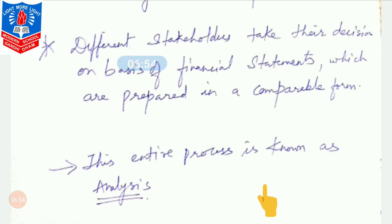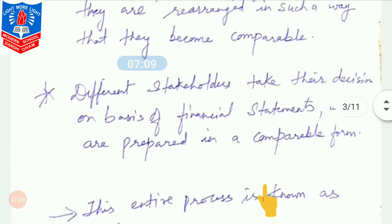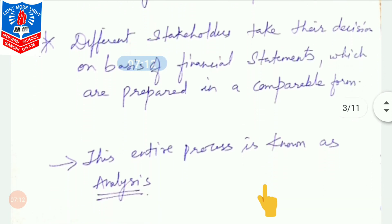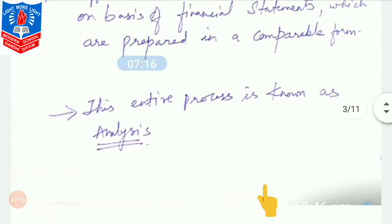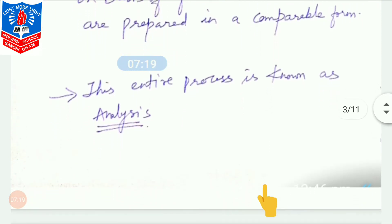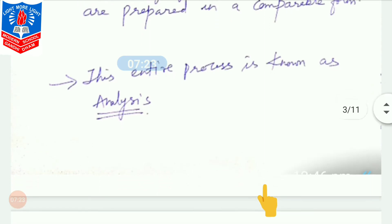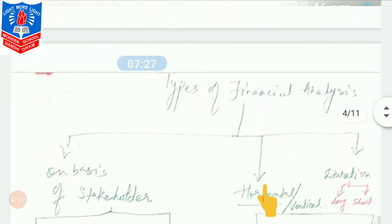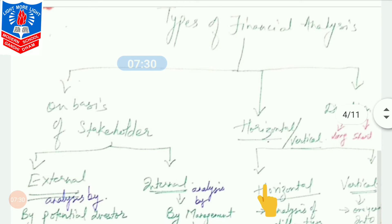After preparation of financial statements, they are arranged in such a way that they become comparable — with a minimum of two years' information compared. Different stakeholders — normally creditors, employees, customers, potential investors, government organizations — take their decisions on the basis of these financial statements in comparable form. This entire process is known as analysis. Types of financial analysis is a very important topic for theory and MCQ.